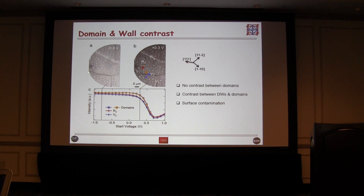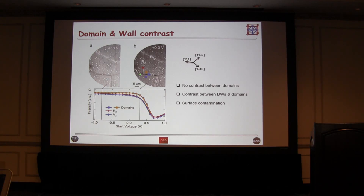Sometimes the domain walls are brighter, sometimes they're darker. There is also surface contamination — bright spots — that play no role in what we're doing, though they actually serve as a useful calibration technique for aligning the microscope. When we increase the start voltage, electrons start to penetrate into the surface and the contrast sharpens up. The domain walls seem to get narrower — in fact the contrast is getting sharper — and it's also getting much stronger. We see both dark and bright domain walls.